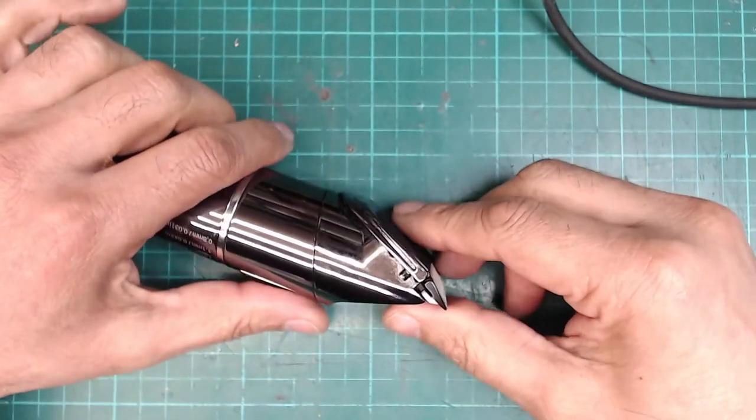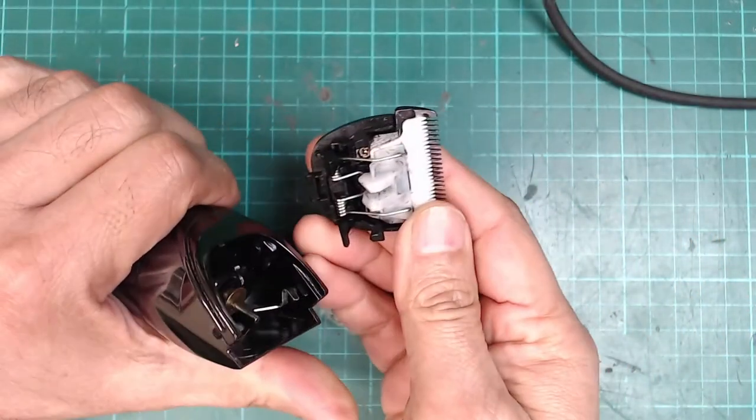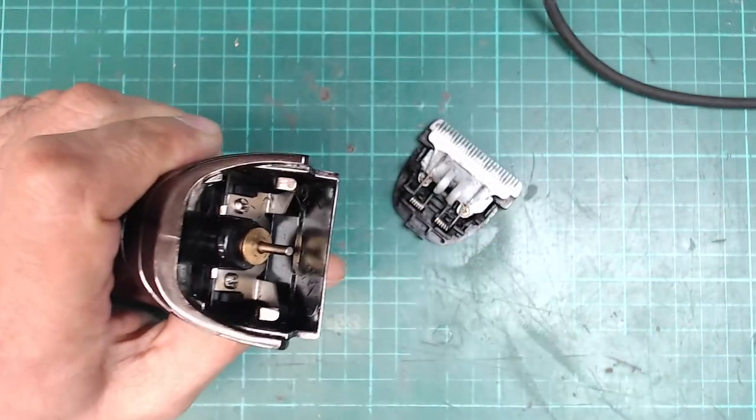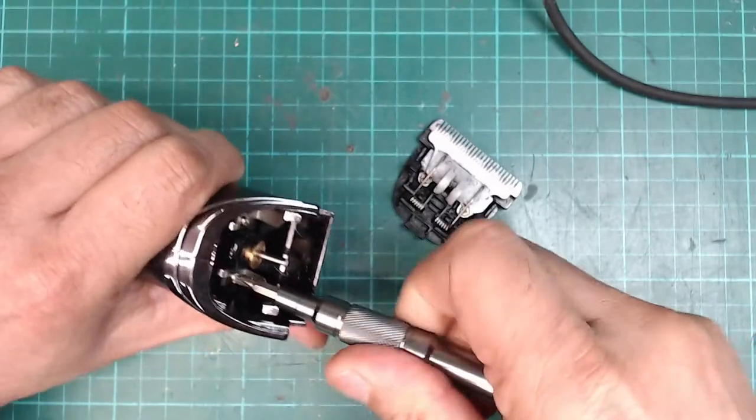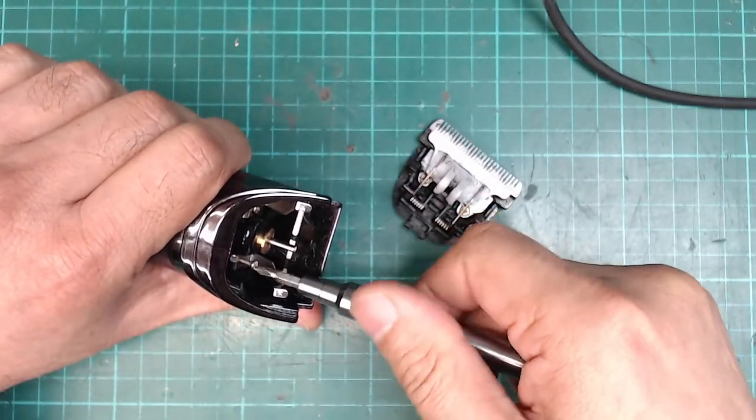I've got someone asking about this top piece that keeps springing out. Basically what it is, you've got this clip that holds the trimmer bit in.